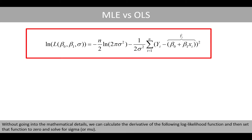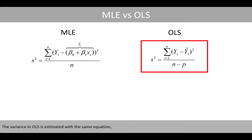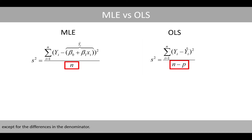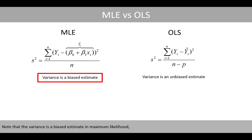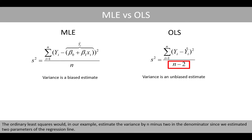Without going into the mathematical details, we can calculate the derivative of the log-likelihood function, set it to 0, and solve for sigma or mu. We will then end up with the following estimate of the variance, or the standard deviation if we take the square root of both sides. The variance in ordinary least squares is estimated with the same equation, except for a difference in the denominator. Note that the variance is a biased estimate in maximum likelihood, whereas the estimated variance in ordinary least squares adjusts for the bias to compute an unbiased variance. In our example, ordinary least squares would estimate the variance using n minus 2 in the denominator, since we estimated two parameters of the regression line.